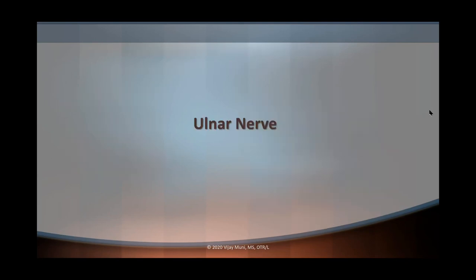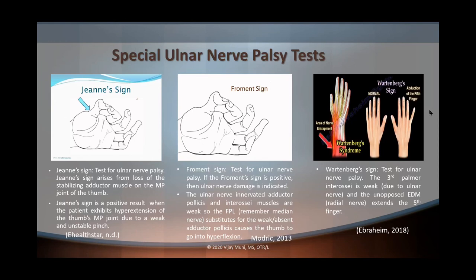Now let's talk about the ulnar nerve. There are several ulnar nerve palsy tests that you can perform. The first one is Jeanne's sign. With Jeanne's sign, you're going to ask your patient to grasp a piece of paper between their thumb and index finger, then attempt to pull the paper from the patient, and observe hyperextension of the thumb MP joint. With Jeanne's sign, there's going to be paralysis of the adductor pollicis muscle, because the adductor pollicis is innervated by the ulnar nerve — so you're going to see hyperextension of the thumb's MP joint.